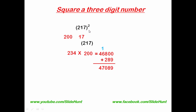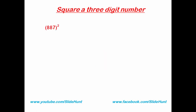The result is 47089, so the square of 217 is 47089. Next number is 887. The nearest hundreds number of 887 is 900, and the difference is 13. Add 13 to 887 and we get 900. Next, subtract 13 from 887 and we get 874.